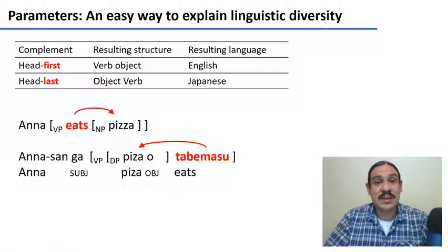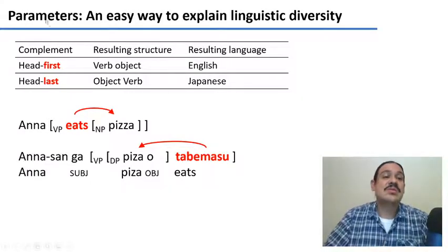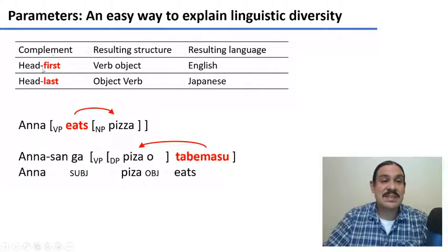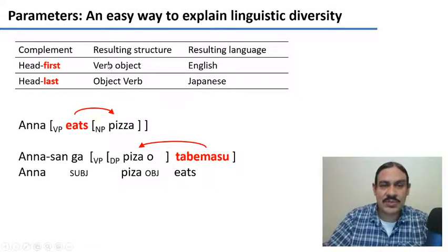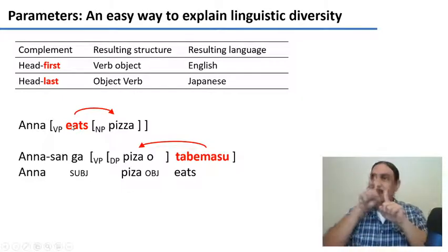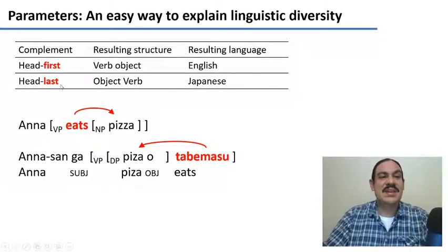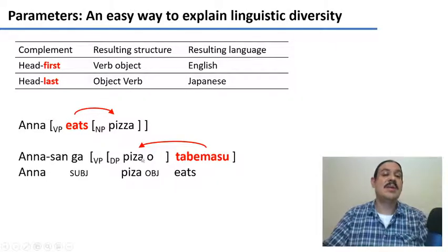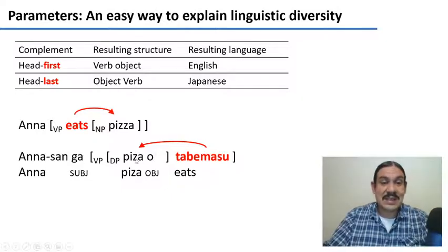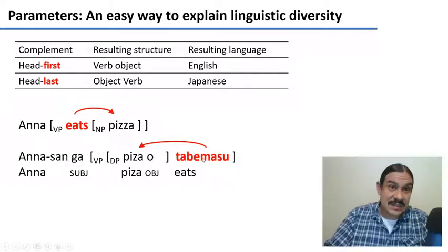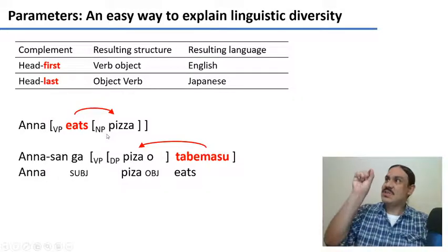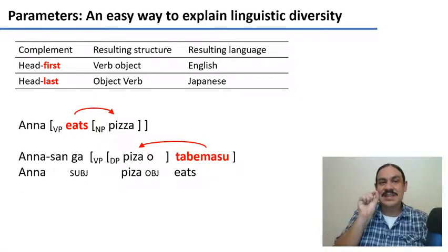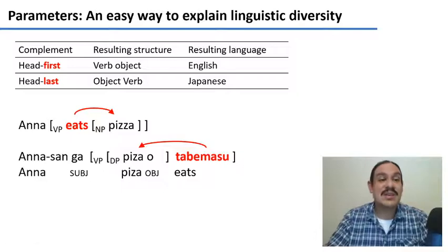And this is the difference between English and Japanese. Regarding complements, English is head first. You have the structure verb, object, as in 'Anna eats pizza.' In Japanese, the heads come last, so you have object and then the head of the verbal phrase, the verb: 'Ana-san ga pizza o tabemasu'—Ana pizza eats. So head first, head last explains some of the differences between English and Japanese.